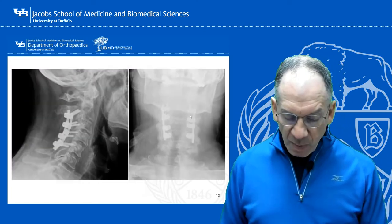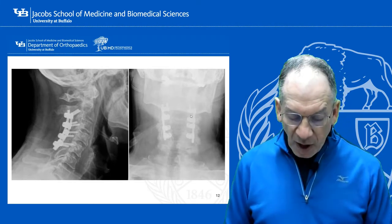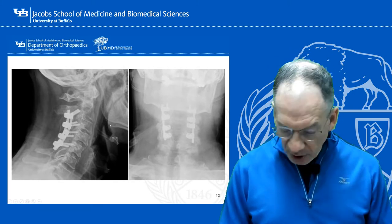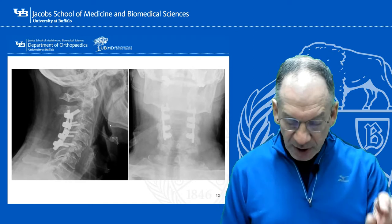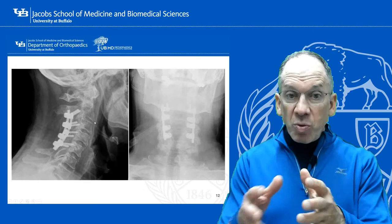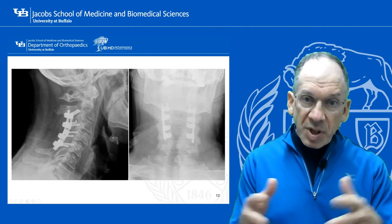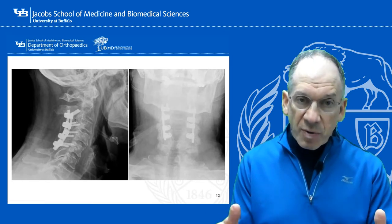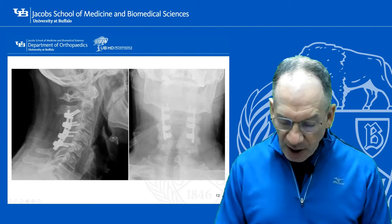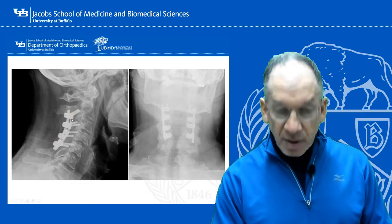This is a post-operative radiograph of someone who had significant compression of their spine with narrowing of the canal — basically stenosis at multiple levels, a very narrow canal, and protruding discs. When you decompress the canal, sometimes you render it unstable. So you can't simply just decompress the cord and nerve roots. If you have to do a wider decompression, you have to stabilize it. In this case, it's stabilized with two rods and screws so that the canal is open and now stable.